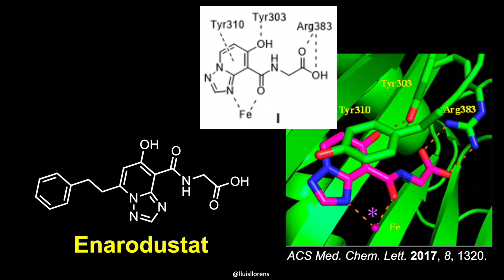Coordination of the iron ion is achieved through the azole nitrogen atom, which also allows pi-pi stacking between the fused pyridine ring and the phenol ring of tyrosine. In general, pi-pi stacking is preferentially located between an electron-deficient ring and an electron-rich one.